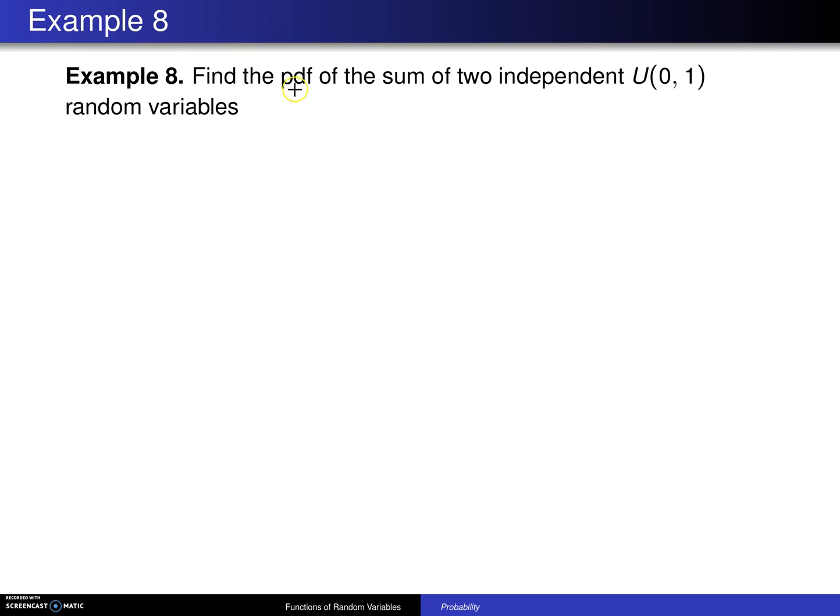In this example, we want to find the probability density function of the sum of two independent uniform 0, 1 random variables. The first step is to give some names to those uniform 0, 1 random variables. So x1 is uniform 0, 1.